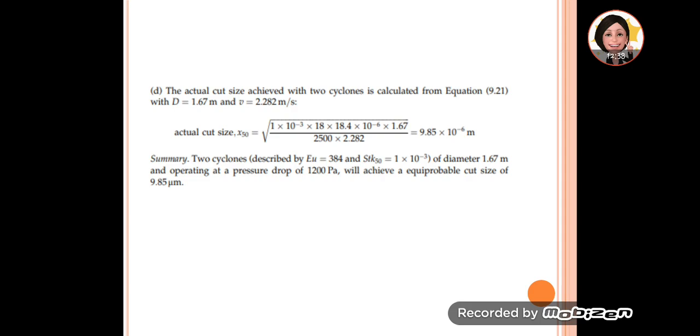For part D, the actual cut size achieved with 2 cyclones is calculated with the D and V we obtained. Using X50, we find the actual cut size. It's very close to the desired cut size. In summary, 2 cyclones with high efficiency using these Euler and Stokes 50 constants require diameter 1.67 meter, operate at 1200 Pascal, and achieve an equiprobable cut size of 9.85 micrometer.